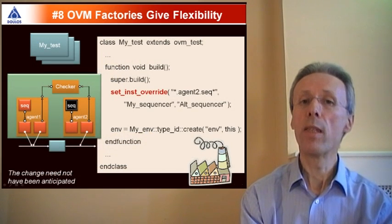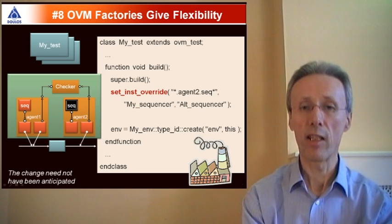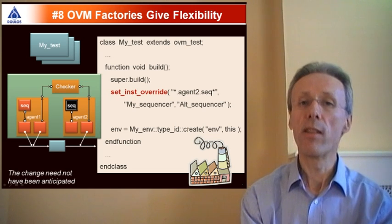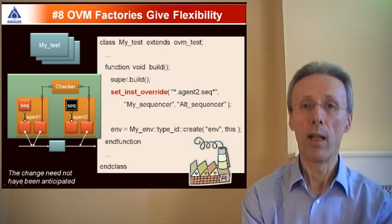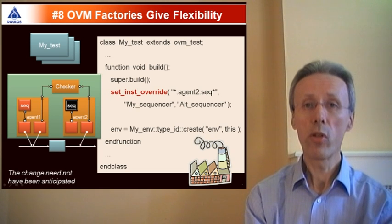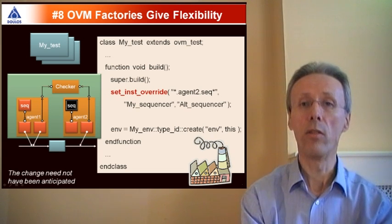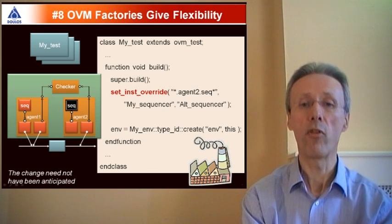Number nine: OVM instantiates components using factories, and that's very flexible. The idea is that instead of instantiating components by name and thereby instantiating a fixed component, the actual choice of component is deferred until runtime, when the component is instantiated using a so-called factory method.